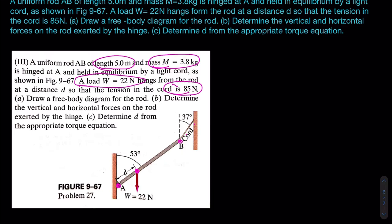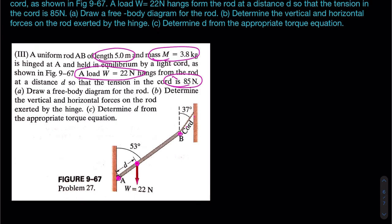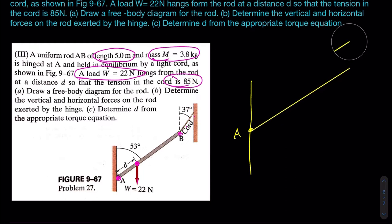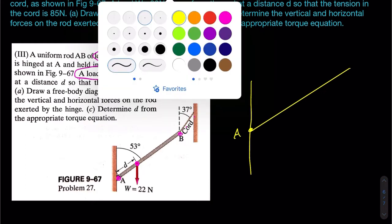Let's clearly extract information and draw a free body diagram so we can solve this problem in a better way. We are dealing with such a case. This is the wall on the left side, and here is A. From A, this beam extends from there to here.